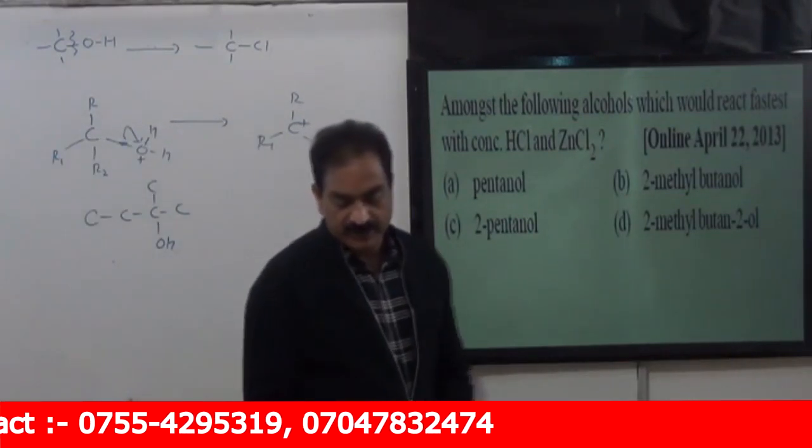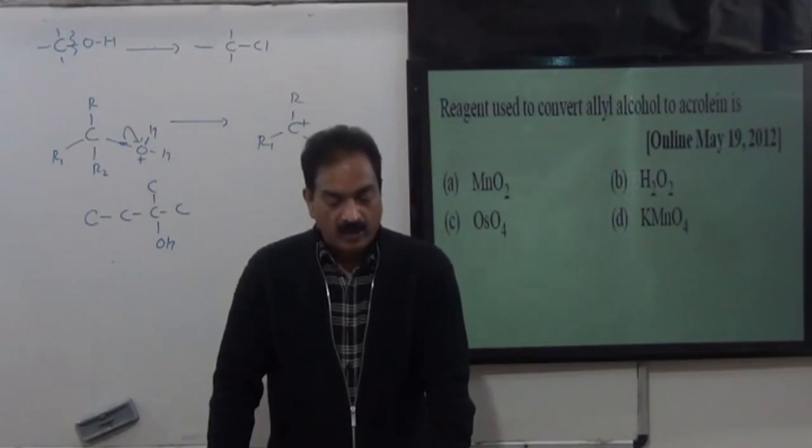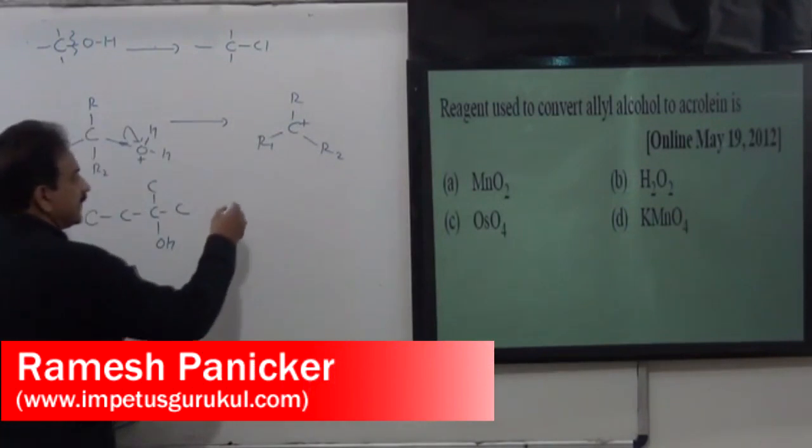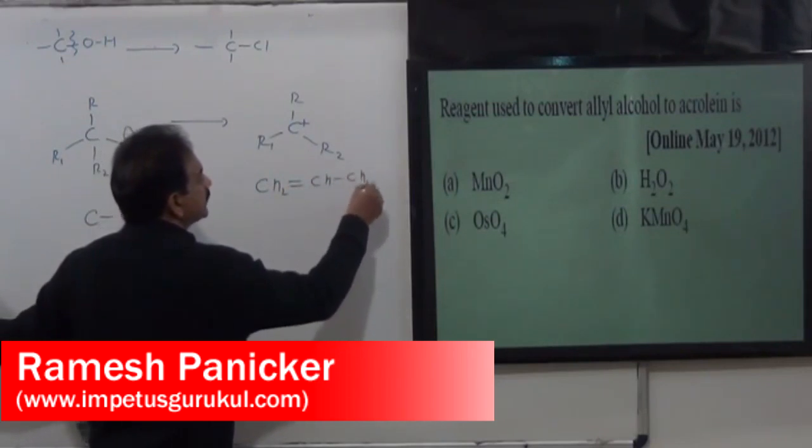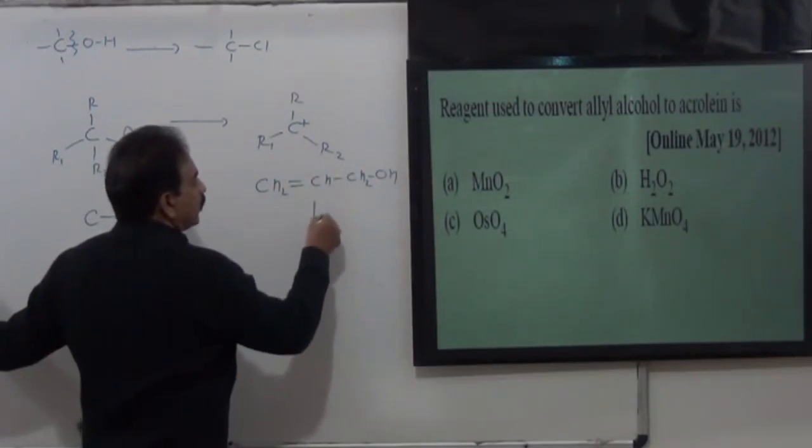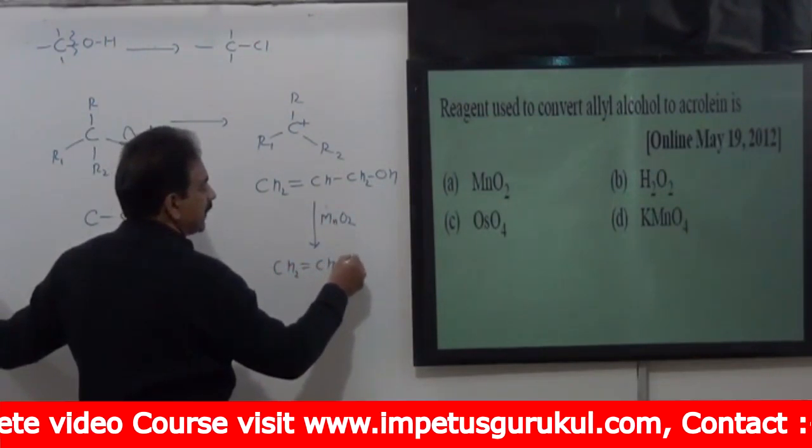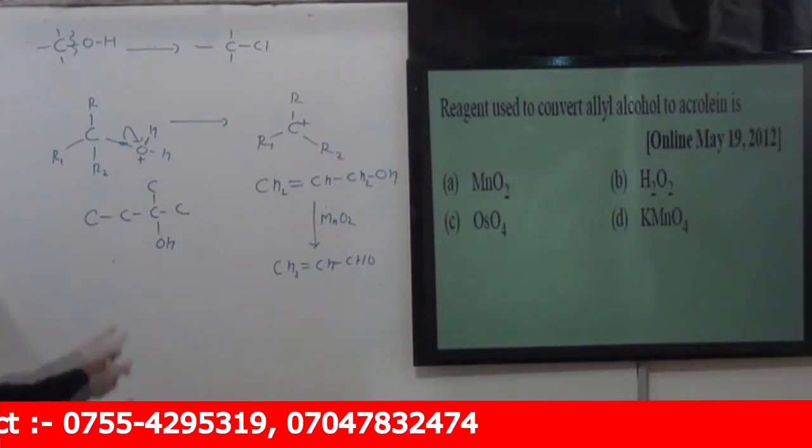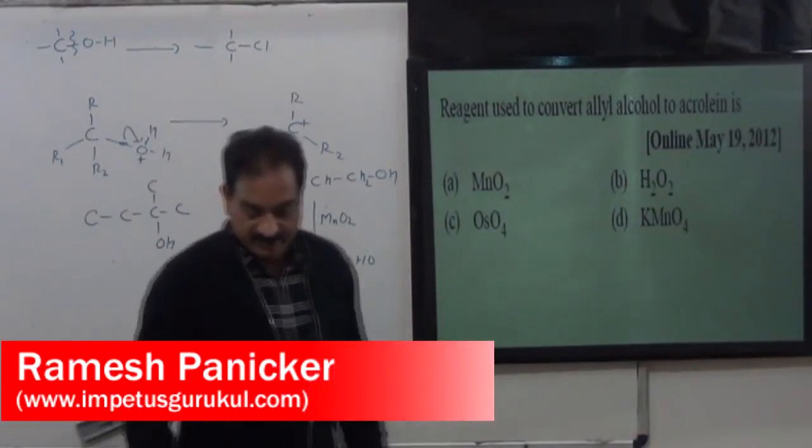So this is most reactive towards Lucas reagent. The reagent used to convert allyl alcohol into acrolein - MnO2 is a reagent which can work. Allyl alcohol CH2 double bond CH-CH2OH, if we take MnO2 then this double bond, Sericamonium nitrate same function can work. And CH2OH will convert to CHO. This is why you can use John's reagent. PDC and PCC can be used for the same function as well.